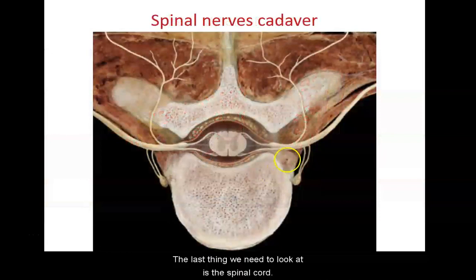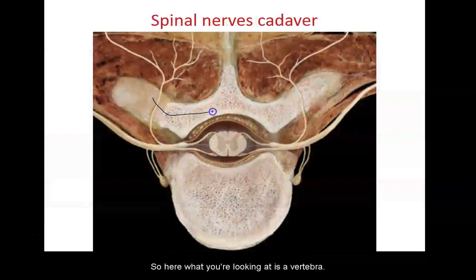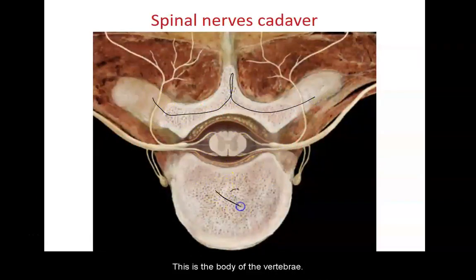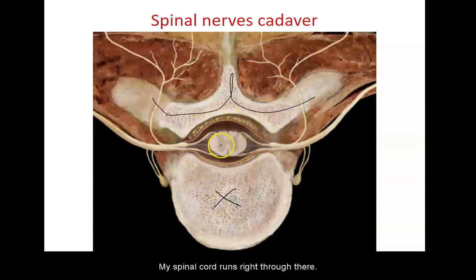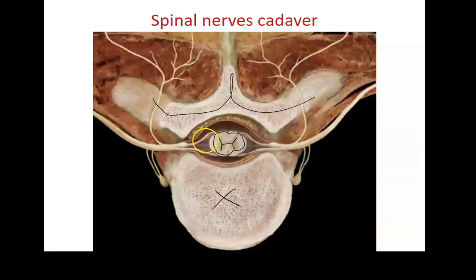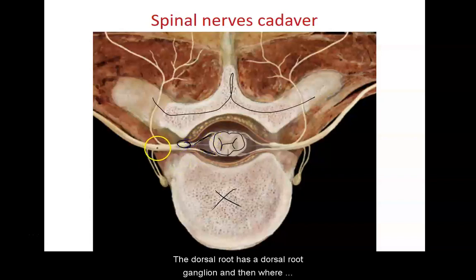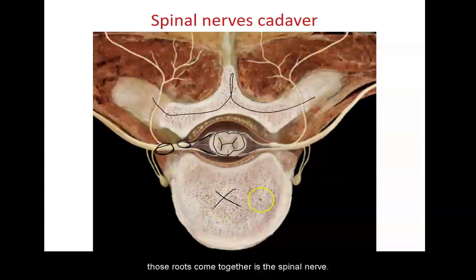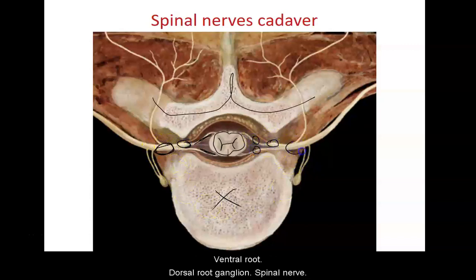The last structure to examine is the spinal cord. Here we're looking at a vertebra — this is the body of the vertebra and this is the vertebral foramen. The spinal cord runs right through there. You can see the butterfly-shaped gray matter in the middle with the white matter surrounding it — the opposite arrangement compared to the brain. There's the dorsal root, the ventral root, the dorsal root ganglion, and where those roots come together is the spinal nerve.